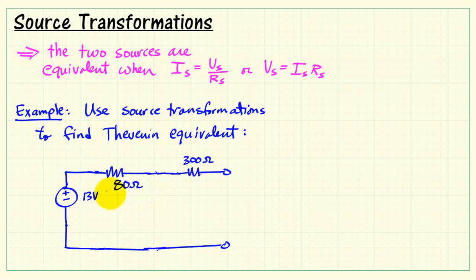And finally we can combine the 80 and 300 Ohm resistors together. And at this point we have found the Thevenin equivalent. It's the simplest possible circuit. Thevenin voltage is 13 volts and the Thevenin resistance is 380 Ohms.